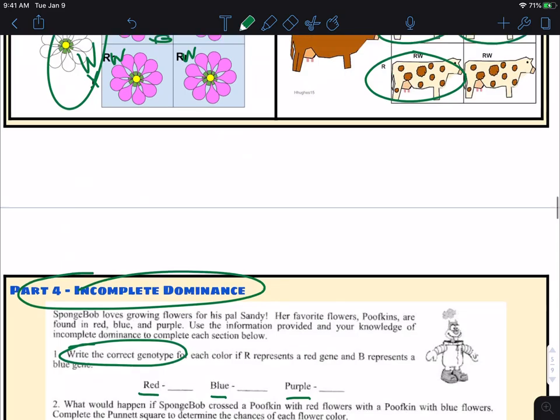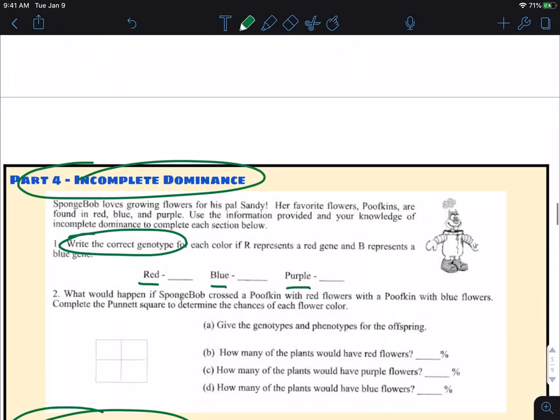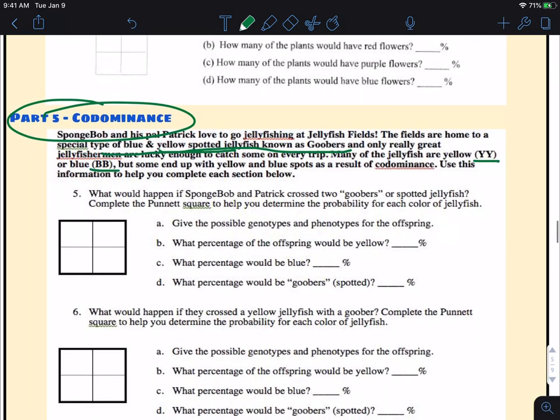So it's codominance. Remember, just like up here where you had the spotted, you had white with red spots. Well down here, we're just talking about blue and yellow-spotted jellyfish, and they're called goobers. So when you see goobers down here, just know that that's what they're talking about.